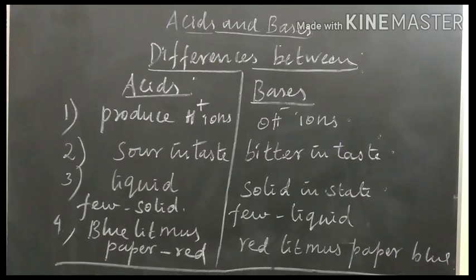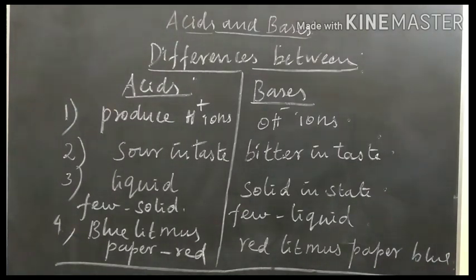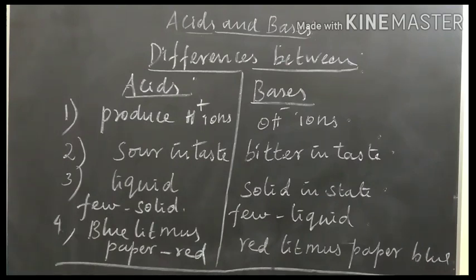Now recall with me, children. Physical properties of bases: they are bitter in taste, generally colourless, and change the colour of indicators — red litmus paper turns blue, methyl orange turns yellow, and phenolphthalein turns pink. Chemical properties: all bases react with non-metallic oxides to form salt and water; bases react with ammonium salts to form metal salts, ammonia gas, and water. Study these properties thoroughly and write them in your notebook. Thank you, children.